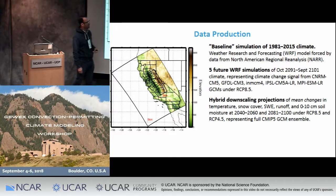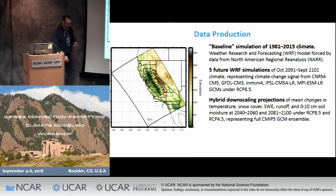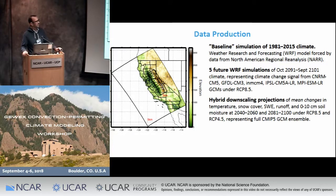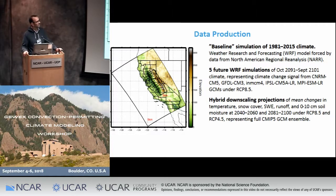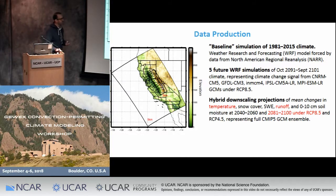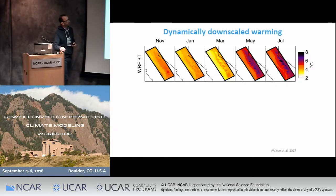We can make projections for time slices and forcing scenarios and models that we're interested in. In this case we're looking at mid-century and end-of-century time slices and a couple of different forcing scenarios, though I'm really only going to be talking about RCP 8.5 in this particular talk, focusing on temperature and runoff at end-of-century.